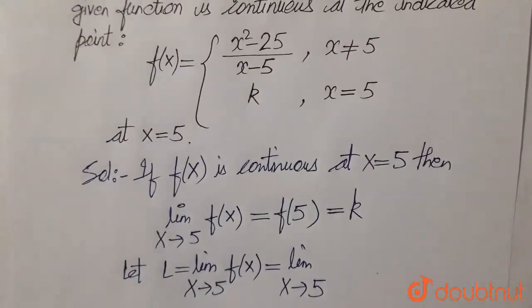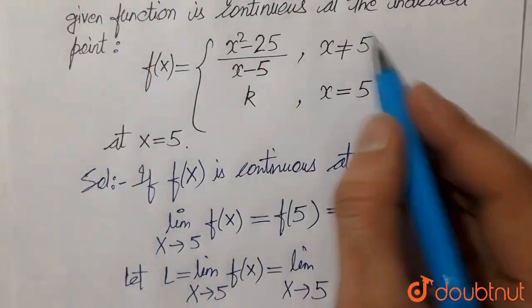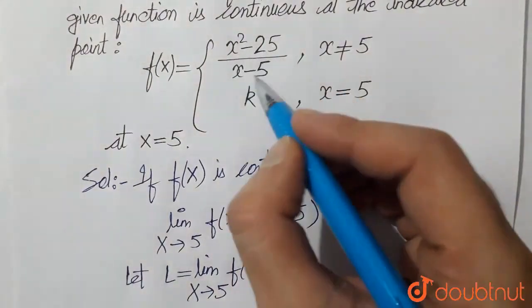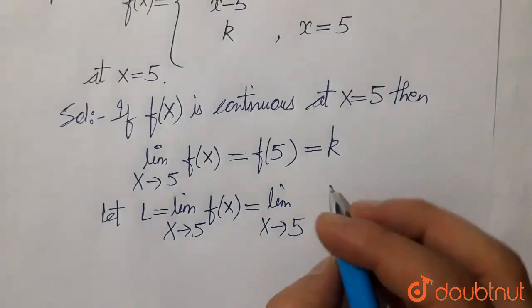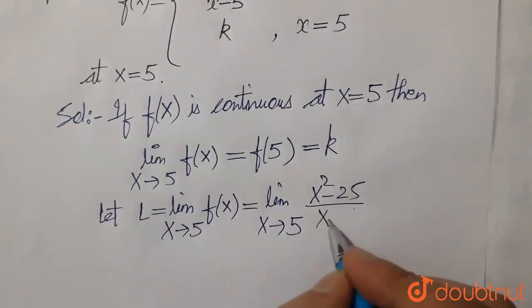We have the value of f(x) when x approaches 5, which is x squared minus 25 divided by x minus 5.